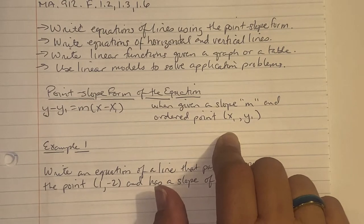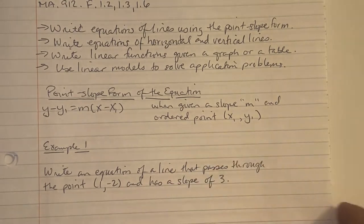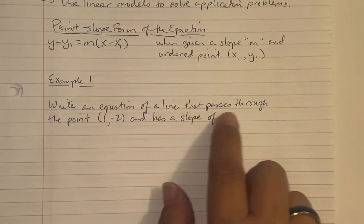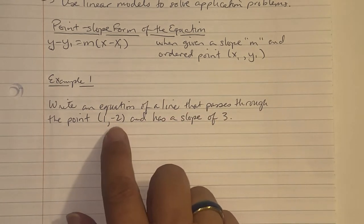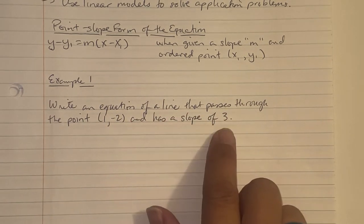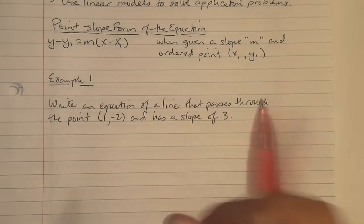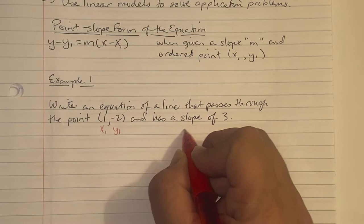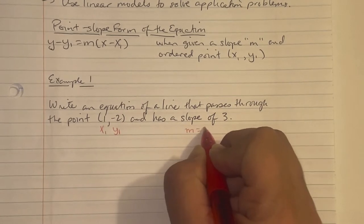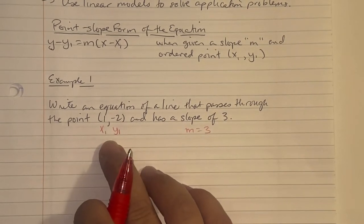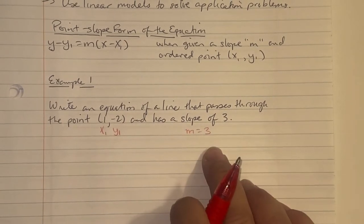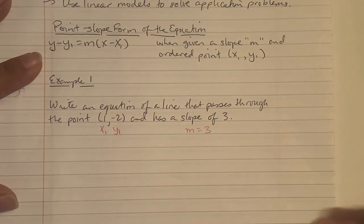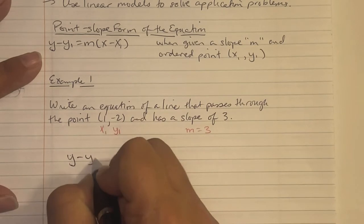Example 1: Write an equation of a line that passes through the point (1, -2) and has a slope of 3. So (1, -2) is our (x₁, y₁), and our slope m is 3. I identified my x₁, y₁ and my slope m.